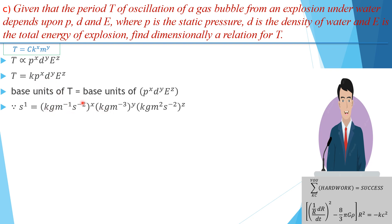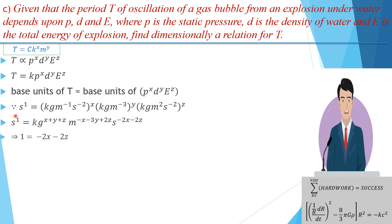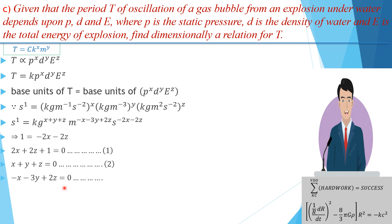The base unit of d (density) is kg·m⁻³, raised to the power y. The base unit of E (energy) is kg·m²·s⁻², raised to the power z. Simplifying and applying index laws — collecting powers of kg, m, and s separately — we form three equations. For seconds: −2x − 2y − 2z = 1, rearranged as equation 1: 2x + 2y + 2z + 1 = 0. For kilograms: x + y + z = 0, equation 2. For meters: −x − 3y + 2z = 0, equation 3.